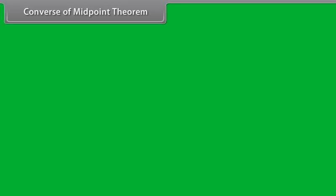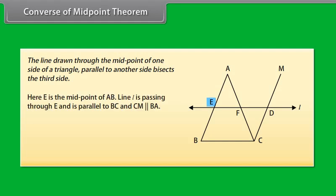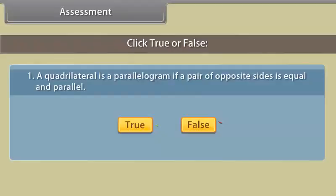Converse of the midpoint theorem: The line drawn through the midpoint of one side of a triangle, parallel to another side, bisects the third side. Here, E is the midpoint of AB, line L passes through E and is parallel to BC, and CM is parallel to BA. We have to prove that AF equals CF. By using the congruence of triangles AEF and CDF, we can prove that AF equals FC.